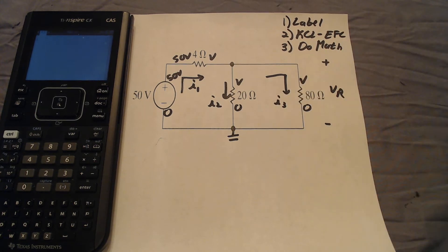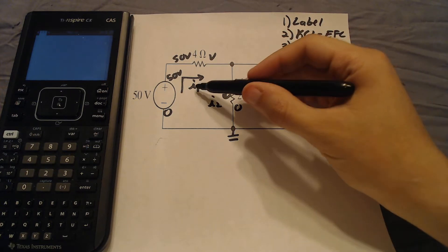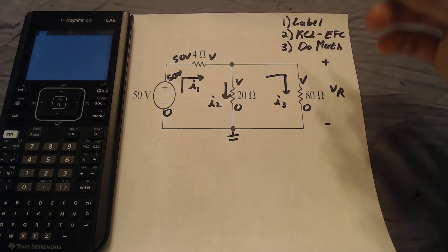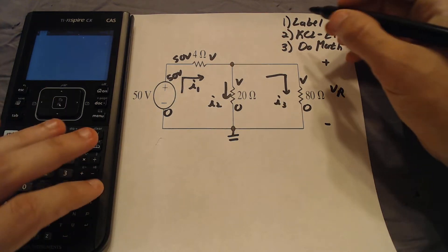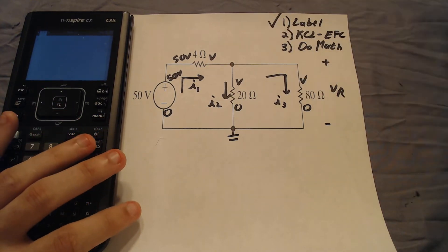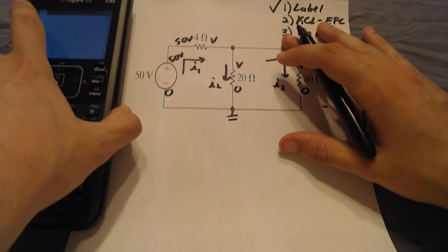Now the direction I picked for my currents is completely arbitrary. I could have picked any direction. I could have picked I1 going down, and I2 and I3 going up, or I2 going up and I3 going down. Completely arbitrary. But after you've picked the direction for your currents, you must be consistent with those directions throughout the whole problem. So we are done labeling our circuit. That's one third of the problem done, and we move on to KCL and EFC.